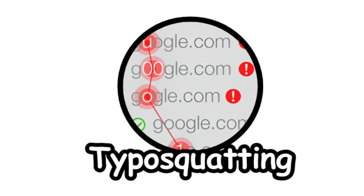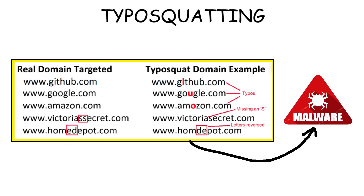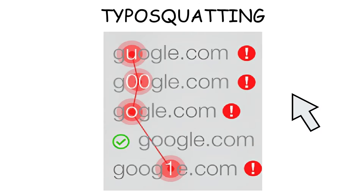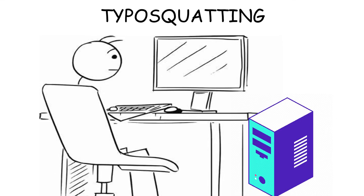Typosquatting. Typosquatting is the practice of using misspelled popular website domains to install malware onto someone's device. Let's say someone carelessly types the wrong Google domain. When they land there, it might auto-install cryptojacking malware that hijacks your CPU and silently mines crypto for the hacker in the background.